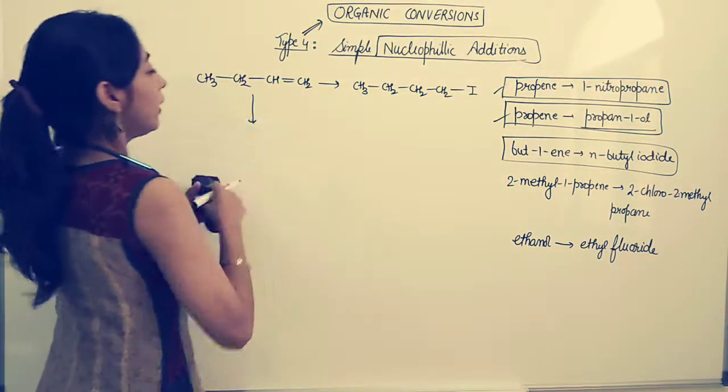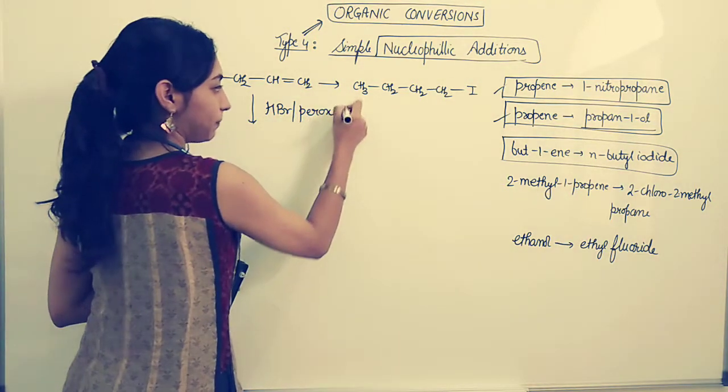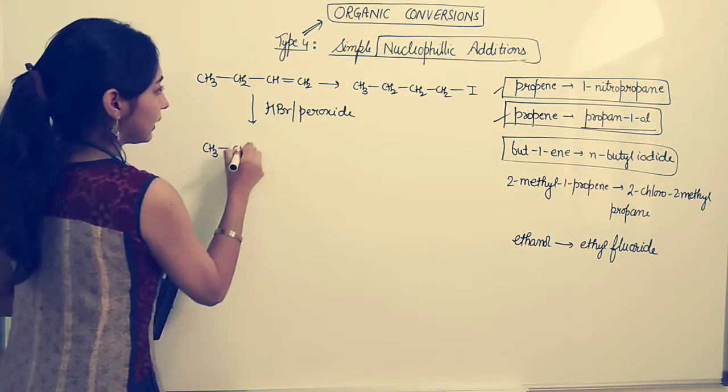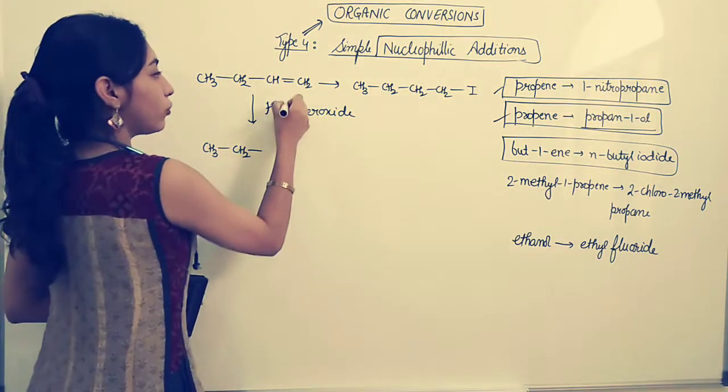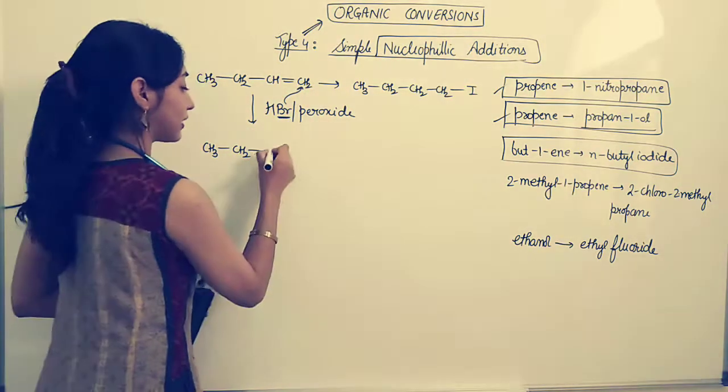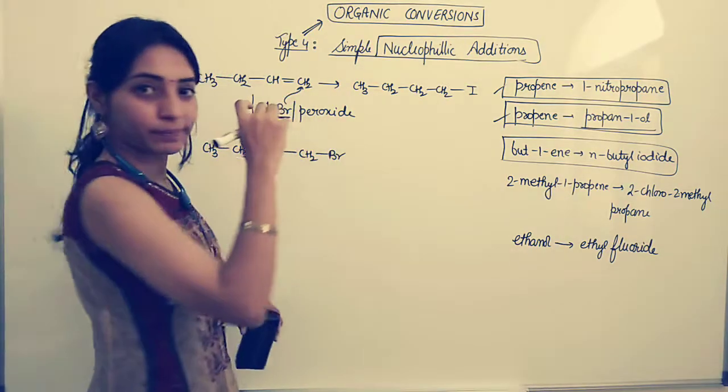Rather, I will be adding HBr in the presence of peroxide. So we will be getting CH3-CH2... Negative goes to more hydrogen because it is in the presence of peroxide. CH2-CH2-Br.